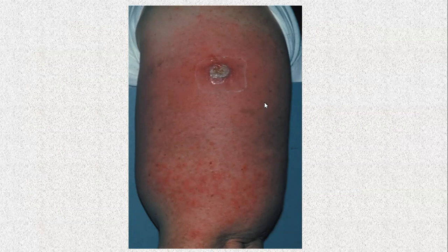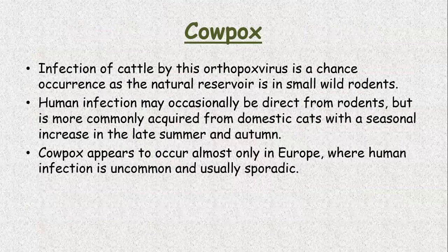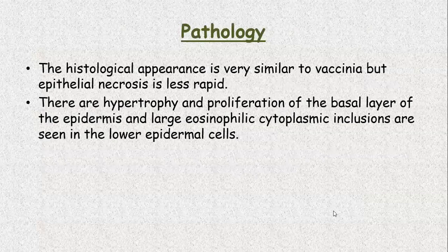This is the vaccination scar resulting in an erythematous rash. Cowpox. Infection of cattle by orthopoxvirus is a chance occurrence as the natural reservoir is in small wild rodents. Human infection may occasionally be direct from the rodents but is more commonly acquired from domestic cats with a seasonal increase in late summer and autumn. Cowpox appears to occur almost only in Europe where human infection is uncommon and usually sporadic.